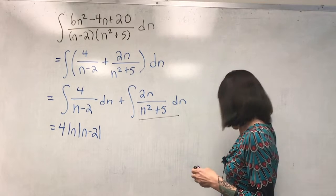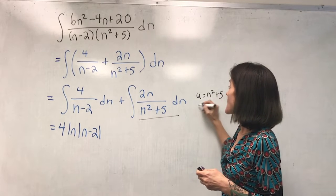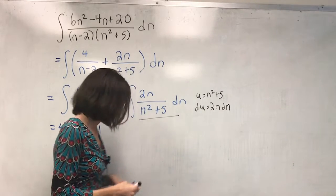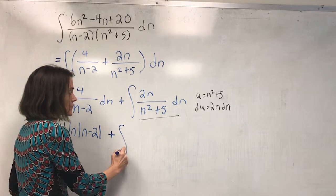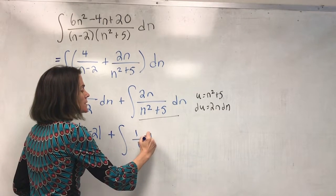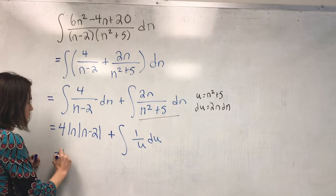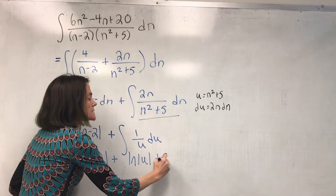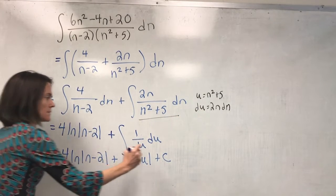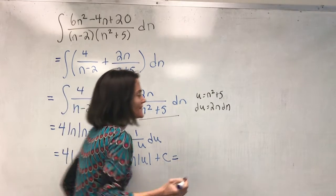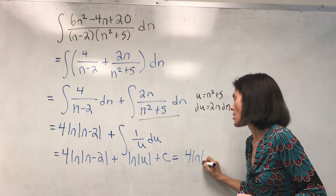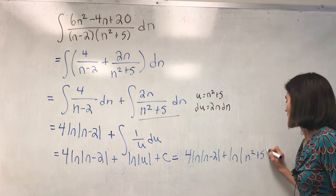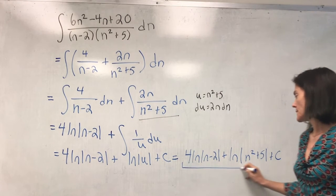For the second integral I use u equals n squared plus 5, so du equals 2n dn. This becomes the integral of 1 over u du, giving ln|u|. Putting it together: 4 ln|n minus 2| plus ln|u| plus C, then substituting back for u gives 4 ln|n minus 2| plus ln|n squared plus 5| plus C. This is our answer.